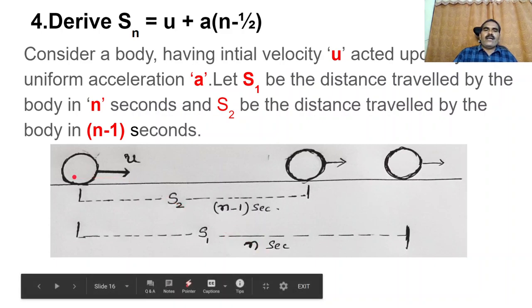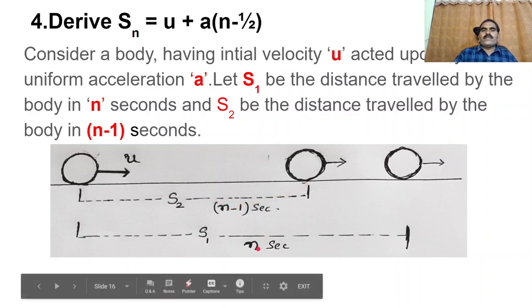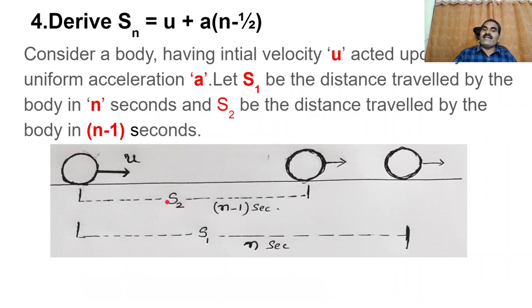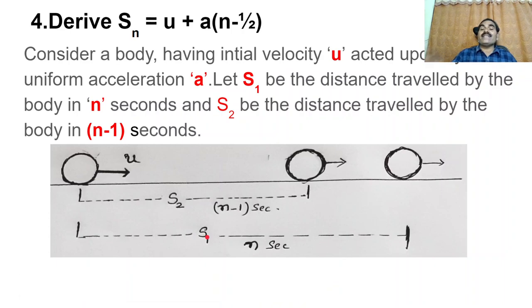Let S2 be the distance travelled by the same body in N minus 1 seconds. For example, if the body travels distance S1 in 10 seconds and distance S2 in 9 seconds, we have to find the distance travelled in the 10th second — that is, the Nth second.